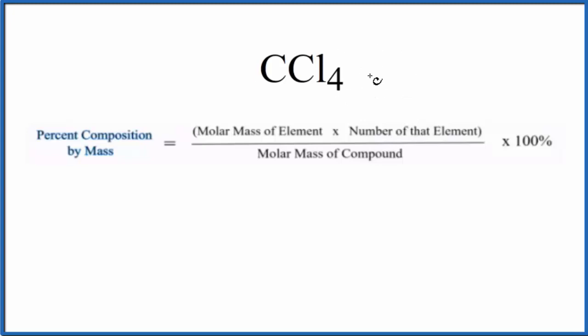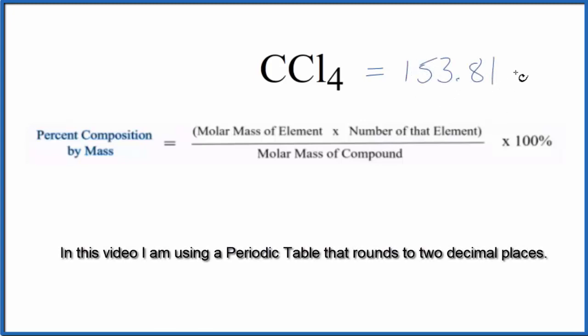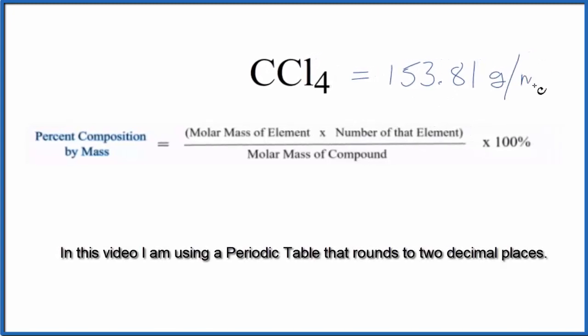When we add up the atomic masses for each element here, we end up with 153.81, and the units are grams per mole. So we have the molar mass for the compound.